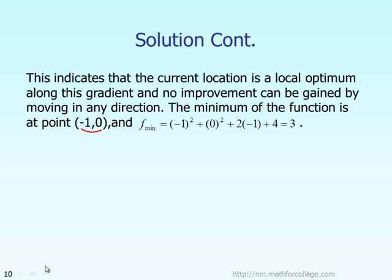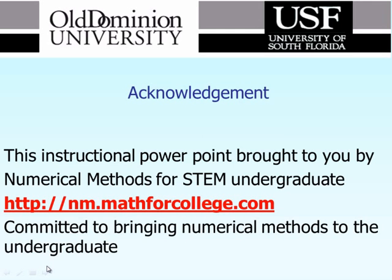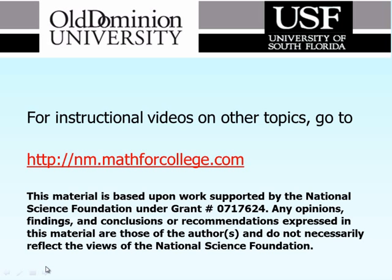The function corresponding value to that will be you replace X by minus 1, you replace Y by 0, and that is the optimum solution. That basically is the end of the example of the so-called steepest descent algorithm. More information you can find on that website, mathforcollege.com. Thank you.